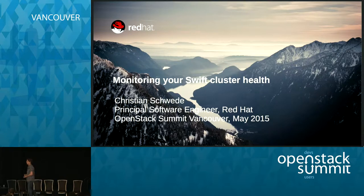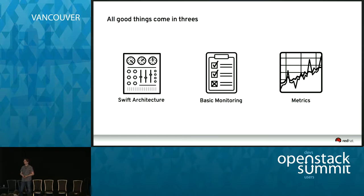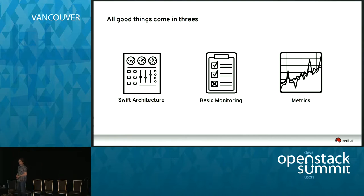This talk will be separated in three parts. First, we're going to have a look at the Swift architecture, because you need to know what you want to monitor — what processes are running on your Swift cluster and what your Swift cluster consists of. Next is some basic monitoring. Swift is shipped with a few tools that are really helpful to ensure your cluster runs in good shape and your data is stored durably. Then we'll continue with metrics, which are really interesting especially for customer requests, so you can ensure quality, detect bottlenecks early, and so on.